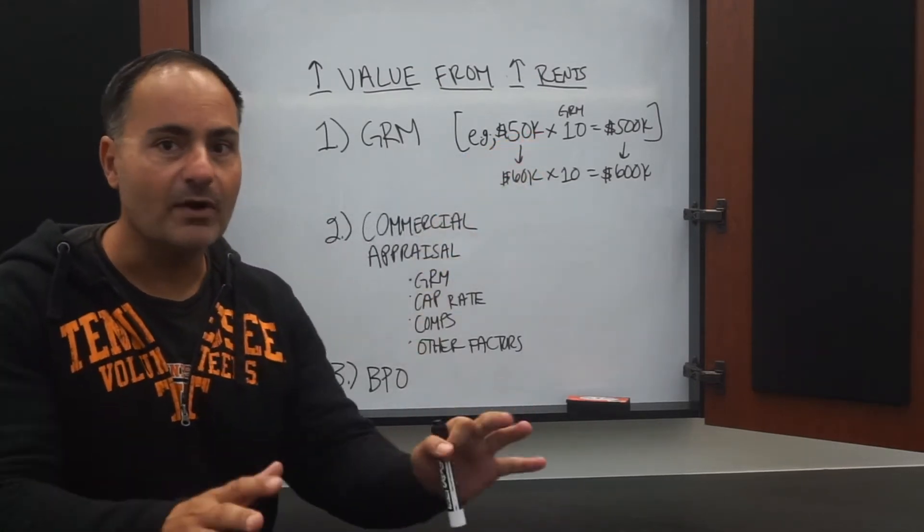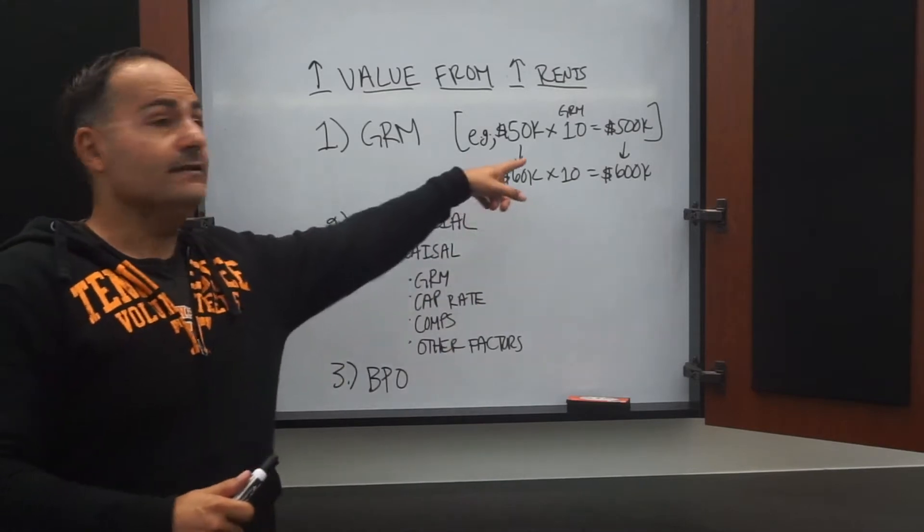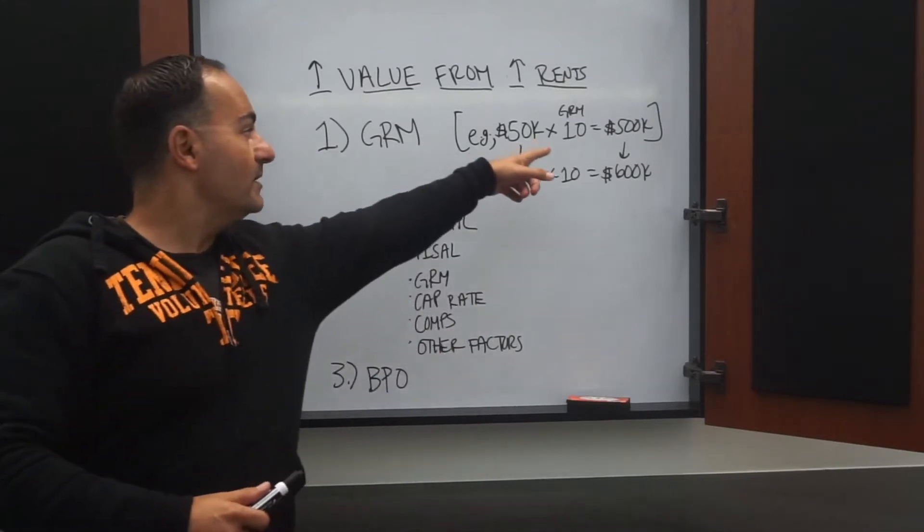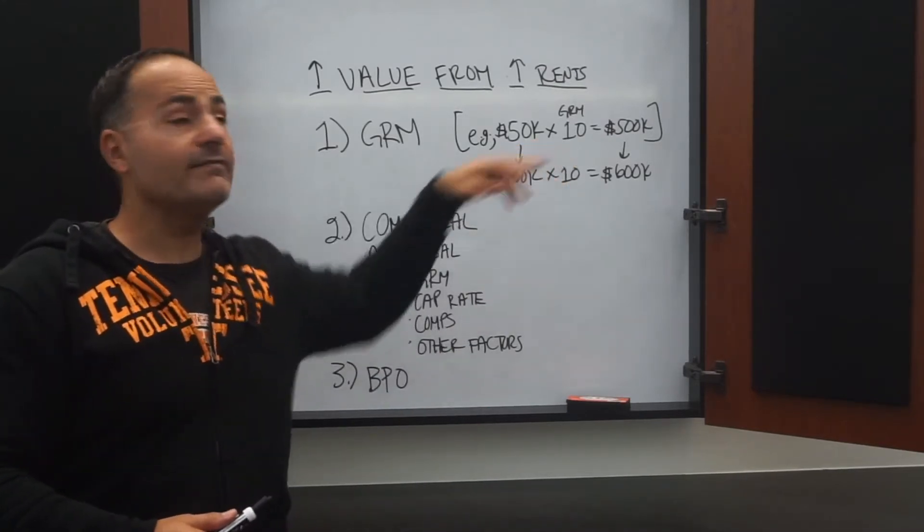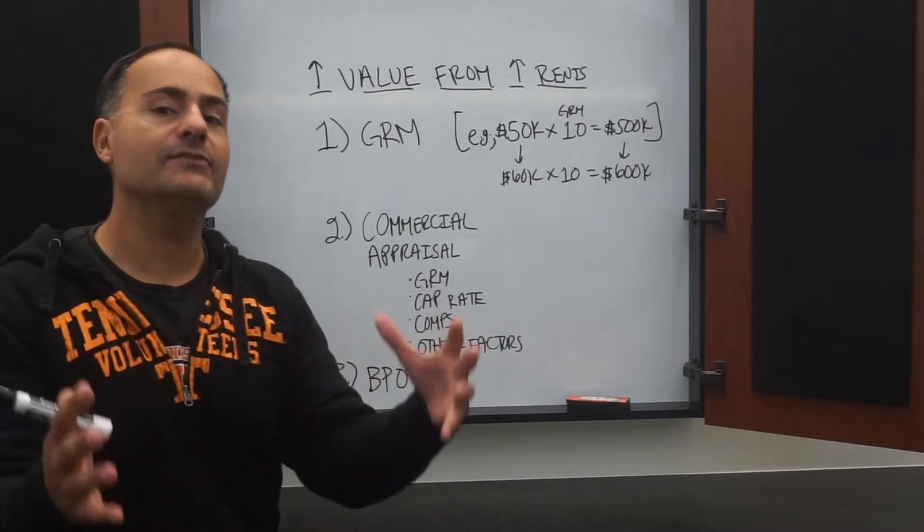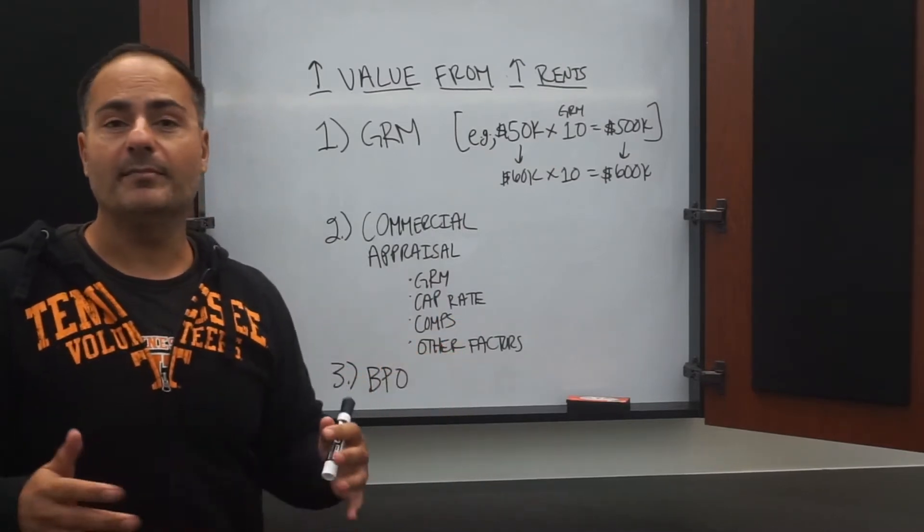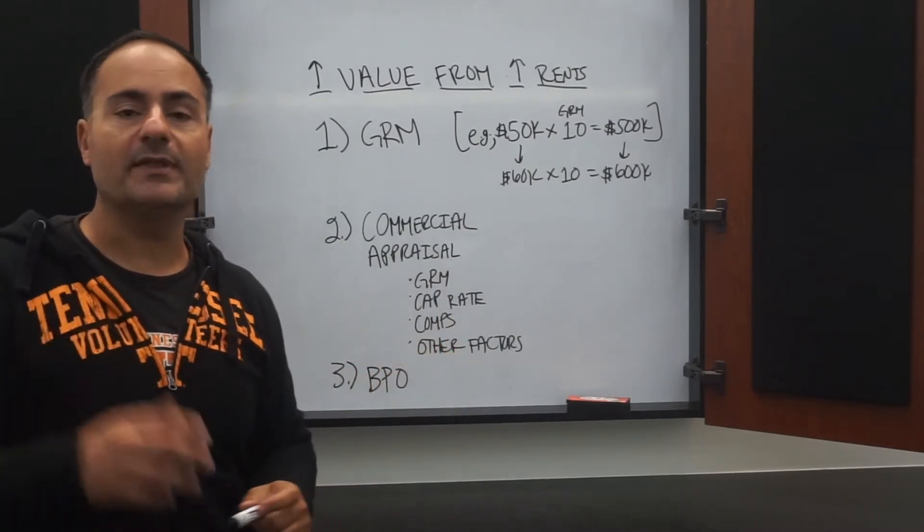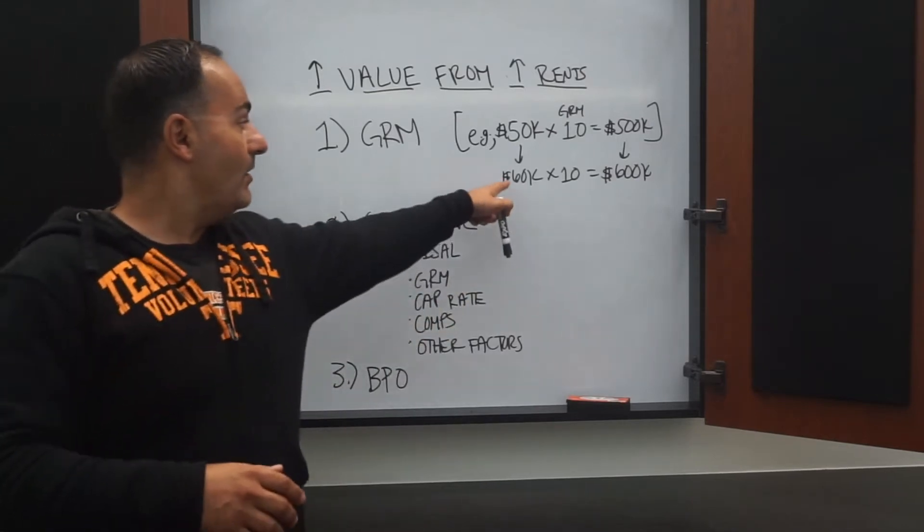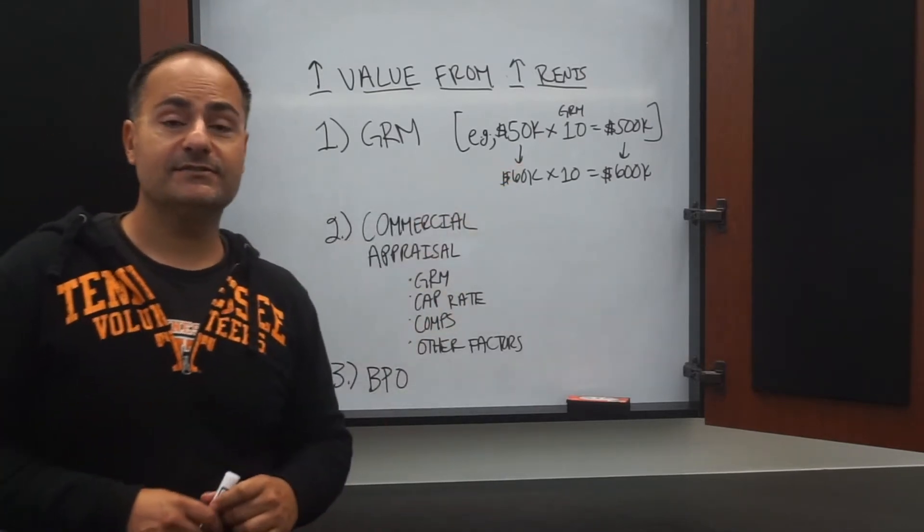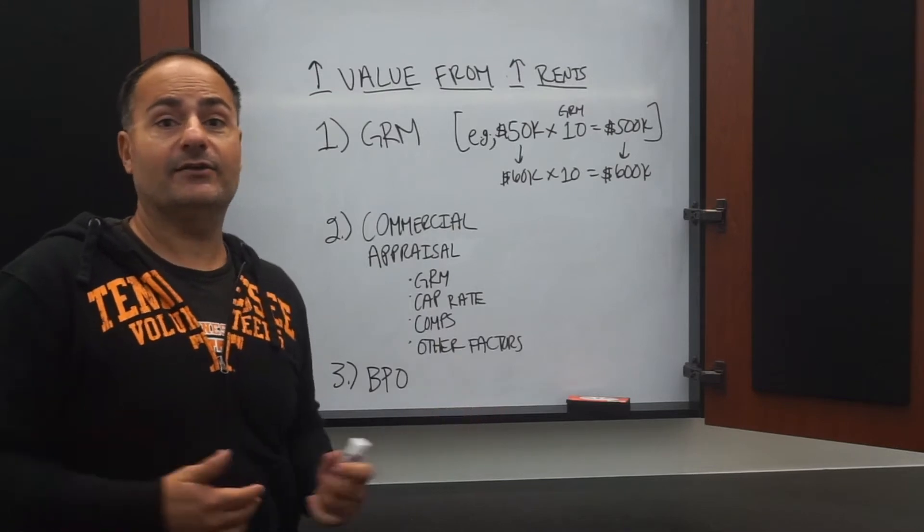Well, if you multiply 10 by $50,000 you get $500,000. That's the value of that apartment building, whether it's a duplex or a triplex or whatever.